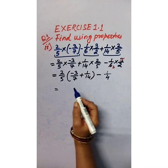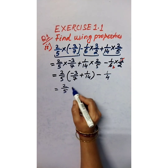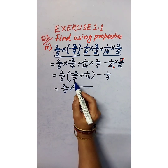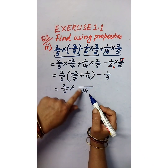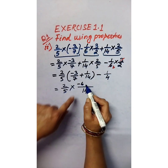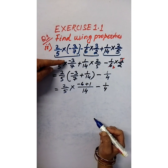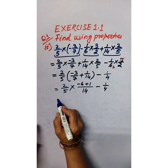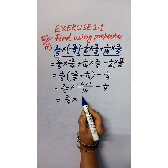Now simplify the bracket: 2/5 into — we add negative 3/7 and 1/14. The LCM of 7 and 14 is 14. Multiplying by 2 gives negative 6, and here plus 1. So the bracket gives negative 6 plus 1. We have used associative property and distributive property here.